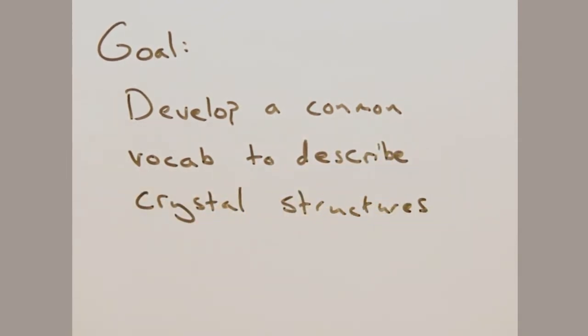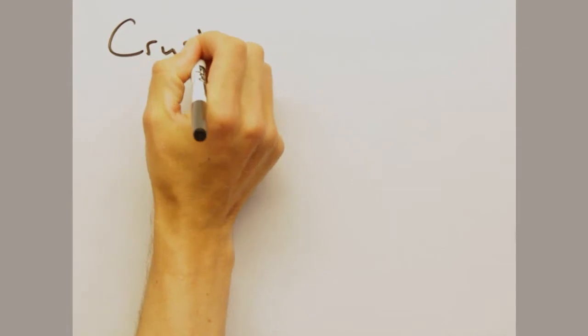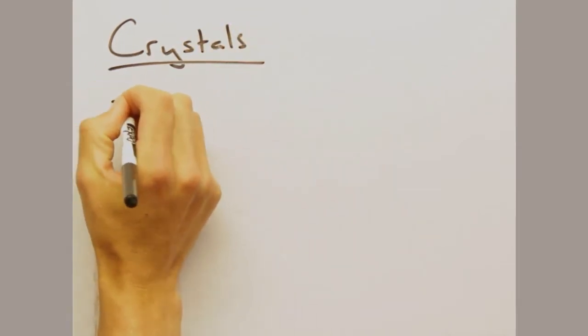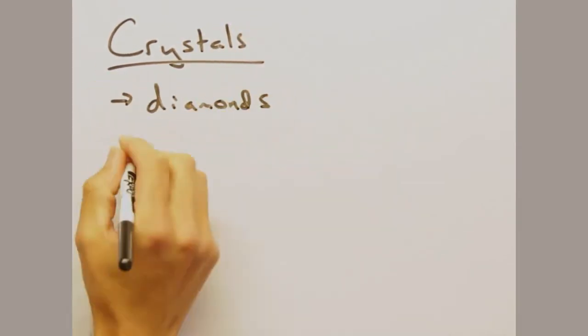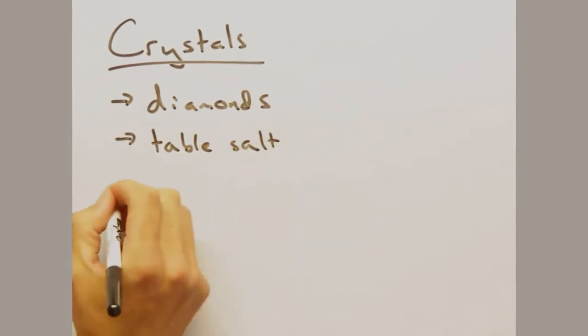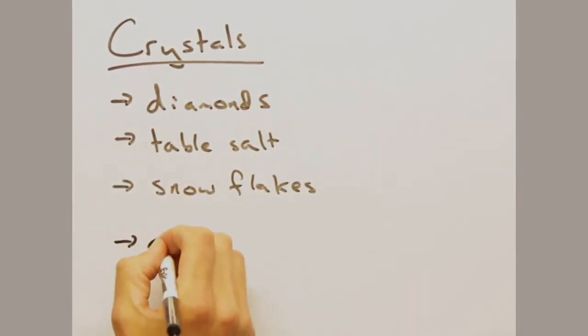Just to be clear everyone, when Eric says crystals, most people tend to think of macroscopic structures with clearly defined facets like diamond, table salt, and snowflakes. While these are indeed crystals, it turns out even something like aluminum is composed of crystals, which may not be obvious now, but by the end of the video it should be.